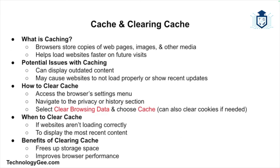Now let's move on to browser caching. Caching is the process where browsers store copies of web pages, images, and other media to load websites faster the next time you visit. While this is convenient, it can sometimes lead to issues such as outdated content being displayed. In most browsers, you can clear the cache by going to the settings menu, finding the privacy or history section, and selecting clear browsing data, where you can choose to clear cache and cookies. If a website isn't loading correctly or isn't showing the most recent updates, you can clear the cache to resolve that issue.